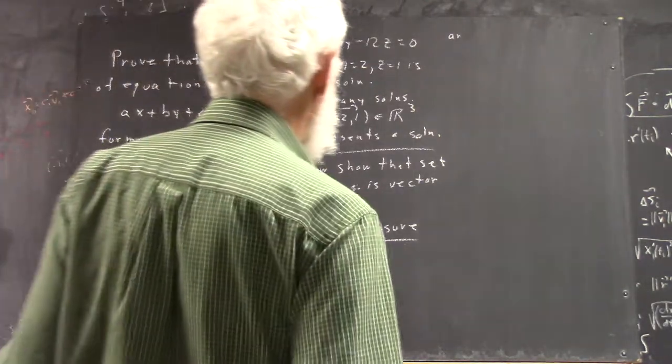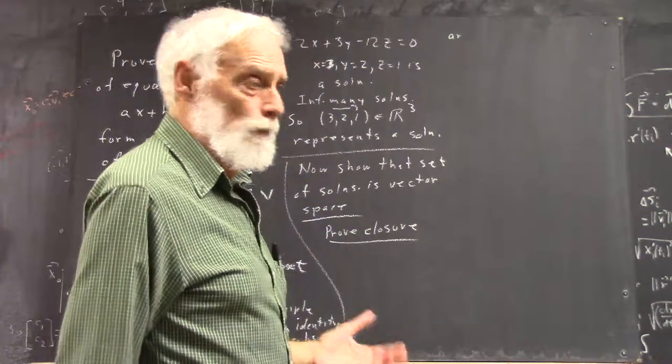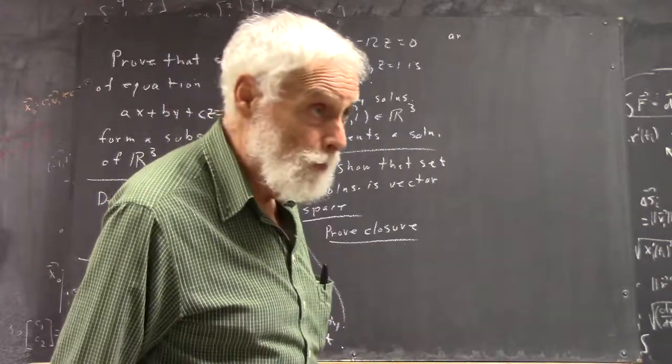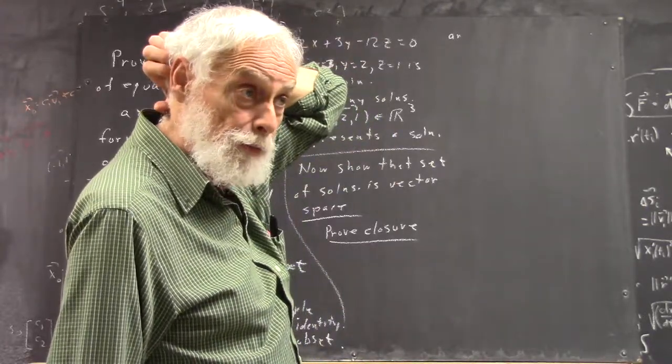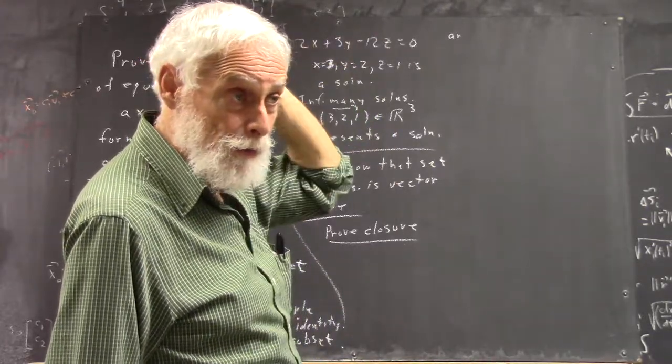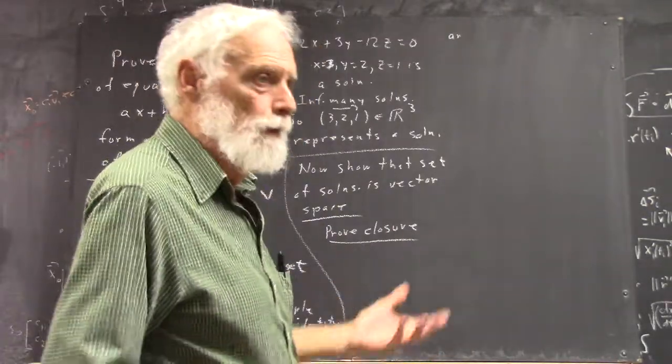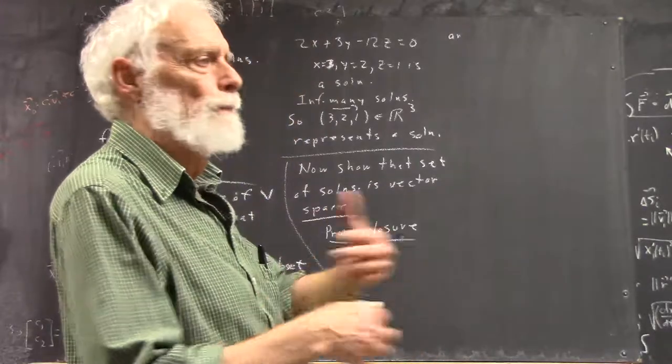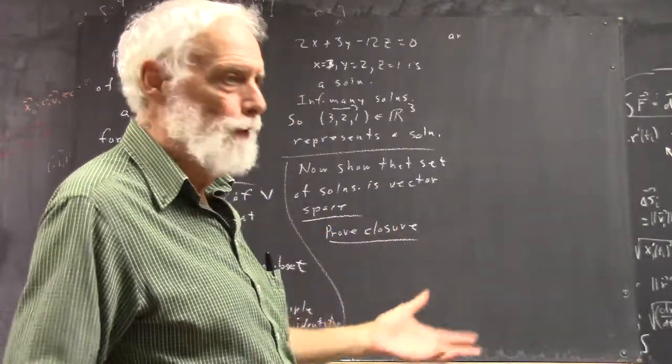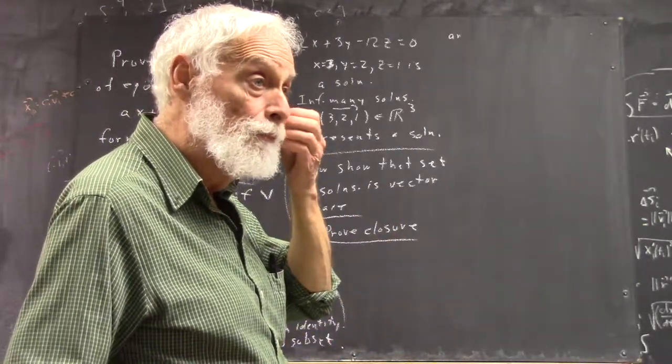So we're trying to get a handle on what it means to prove closure. Once we get a handle on it, it's pretty easy to prove it, but you have to know how to symbolize it. And you have to really understand closure, and you have to prove a variety of subsets or subspaces in different contexts.